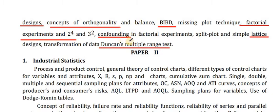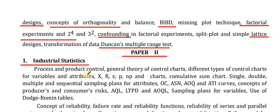These are the syllabus topics of Statistics Optional Paper 1. Now we will discuss Paper 2. Point number 1: Industrial Statistics. Process and Product Control, General Theory of Control Charts, different types of control charts for variables and attributes — X-bar R, SP, NP, and C charts, Cumulative Sum Charts.